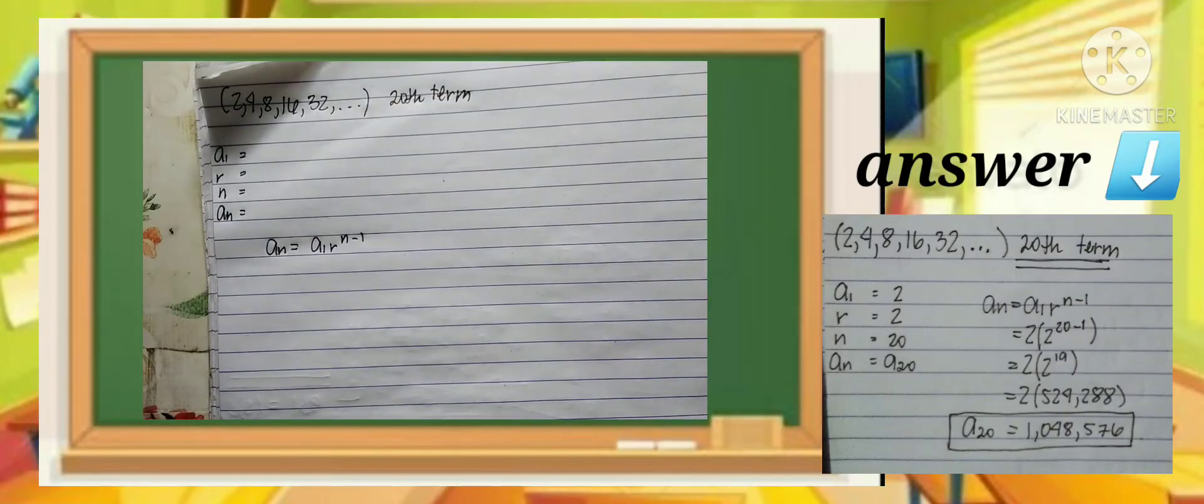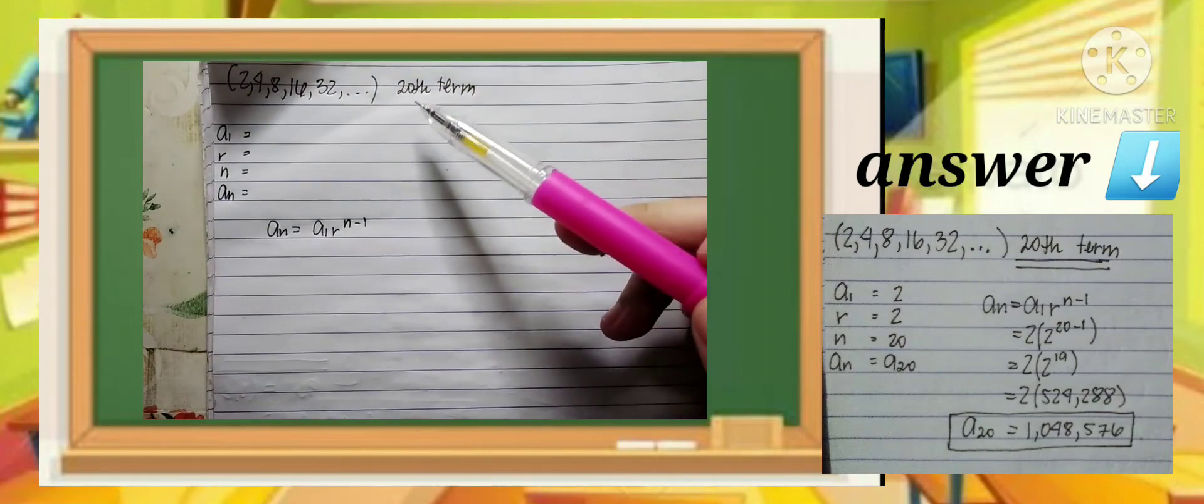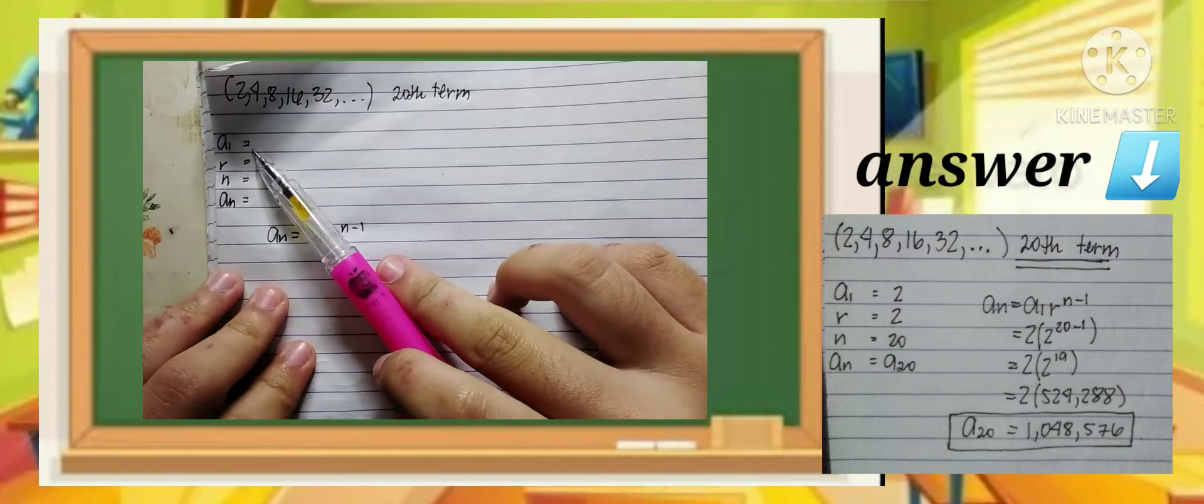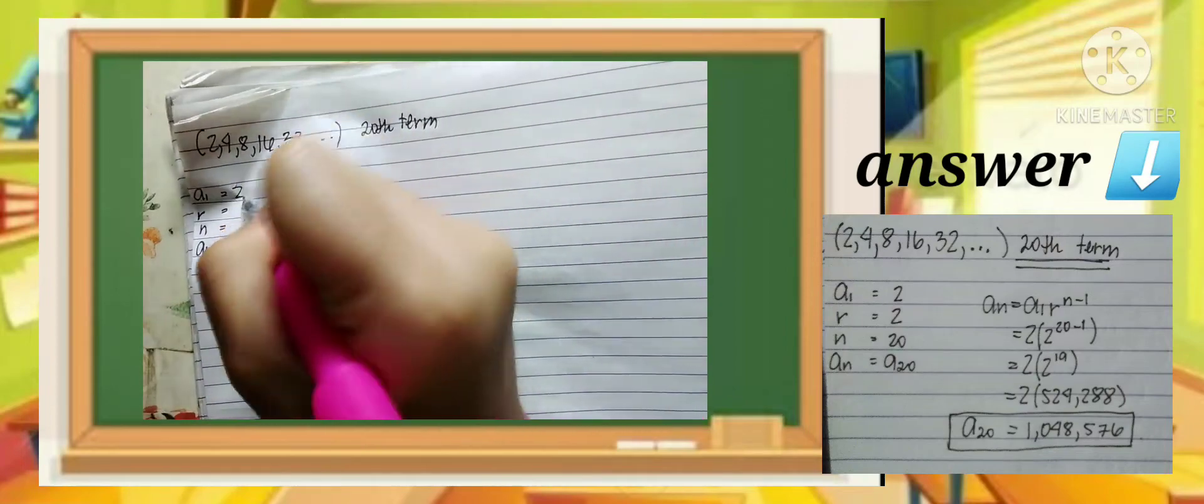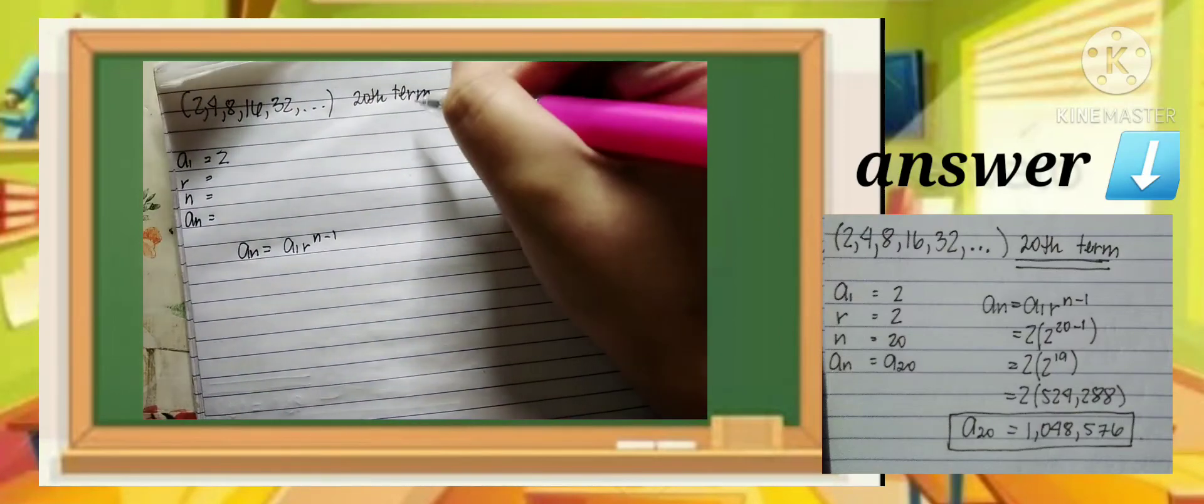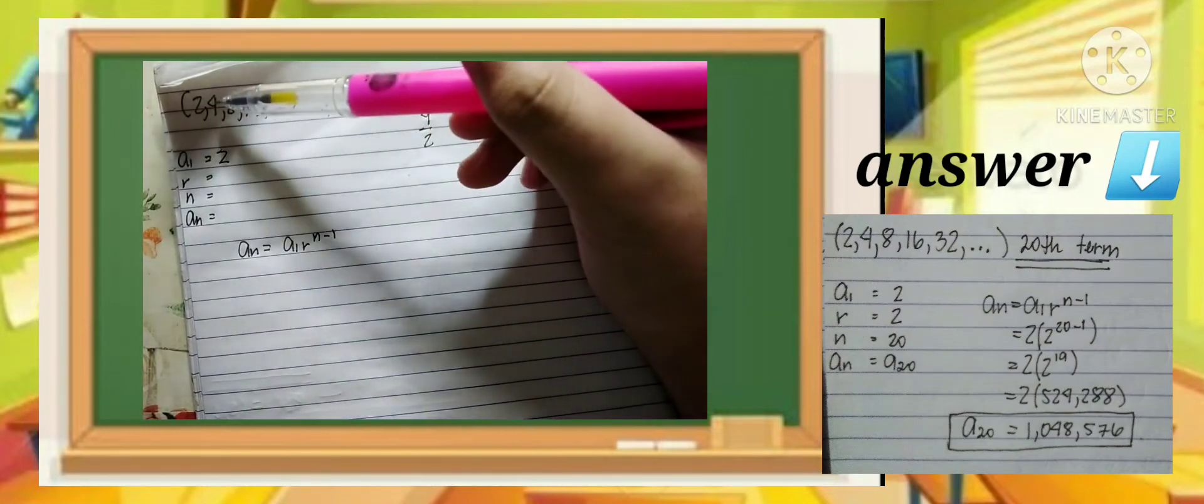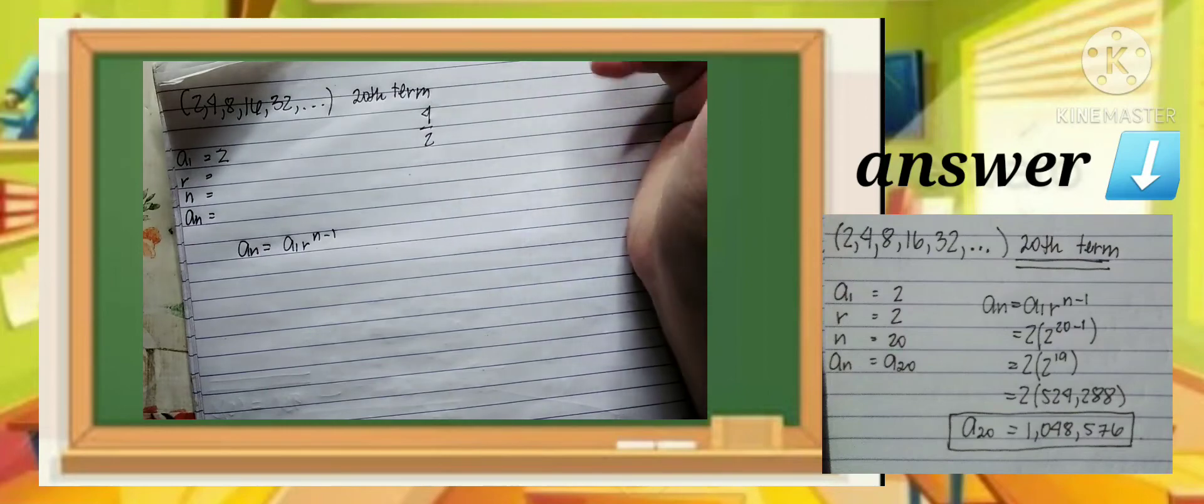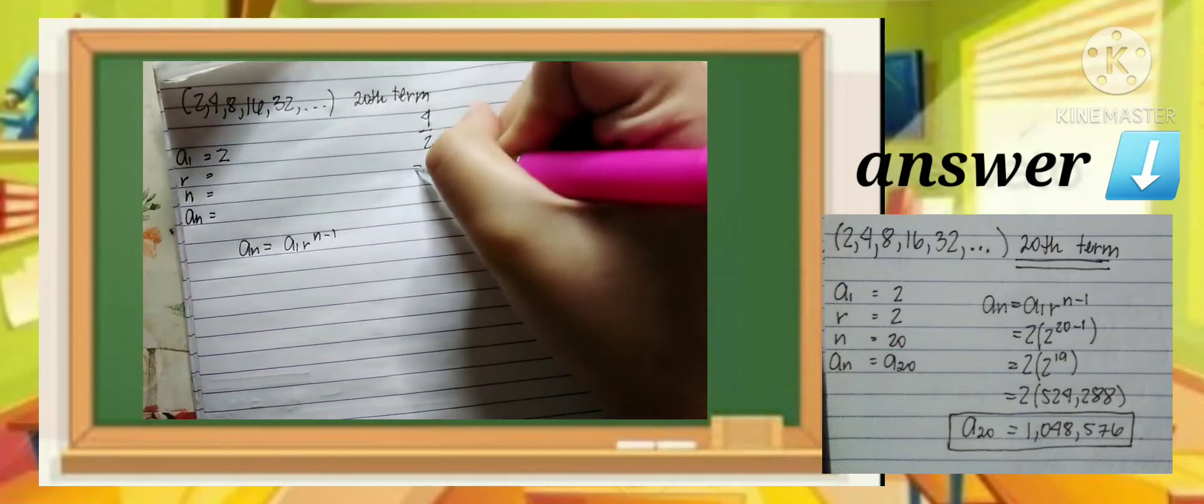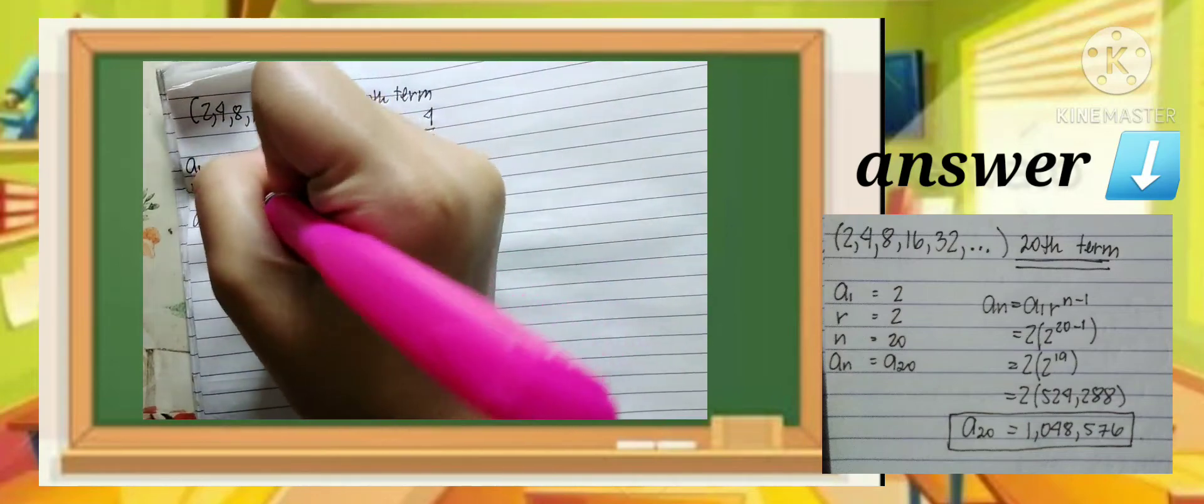This is an example of geometric sequence. The given is 2, 4, 8, 16, 32, and the rest. We need to find the 20th term. Our a sub 1 is 2. The ratio is 4 over 2, because 4 is our second term and the first term is 2. So that equals 2. Our ratio is 2.